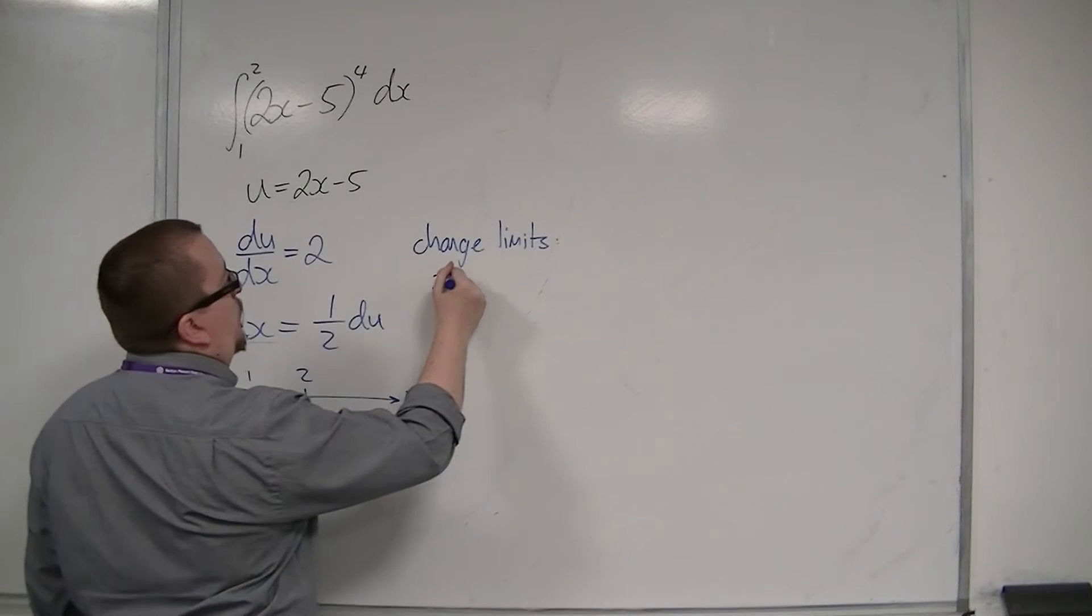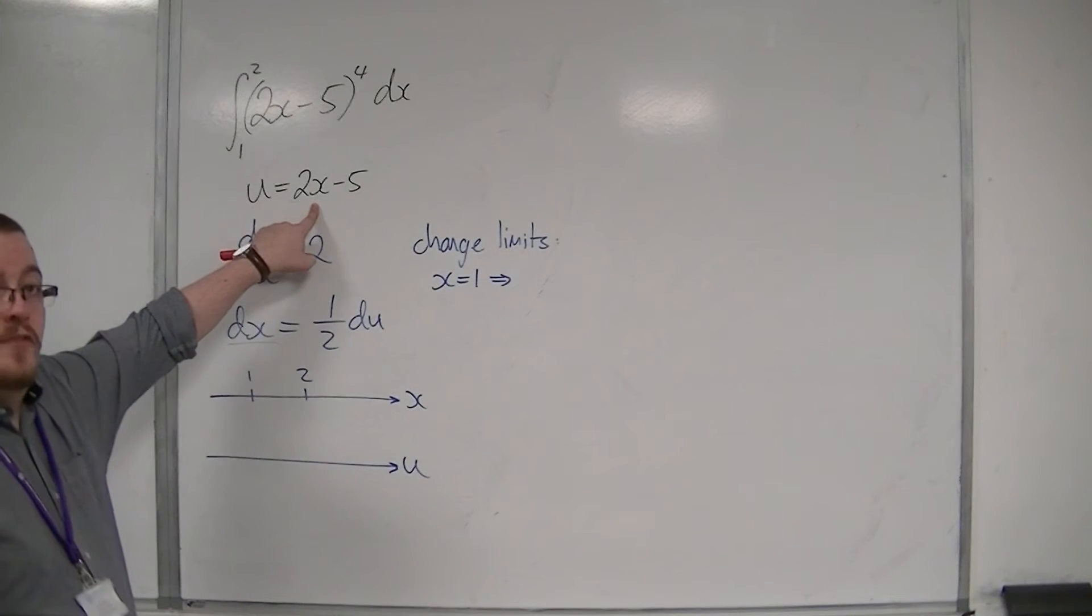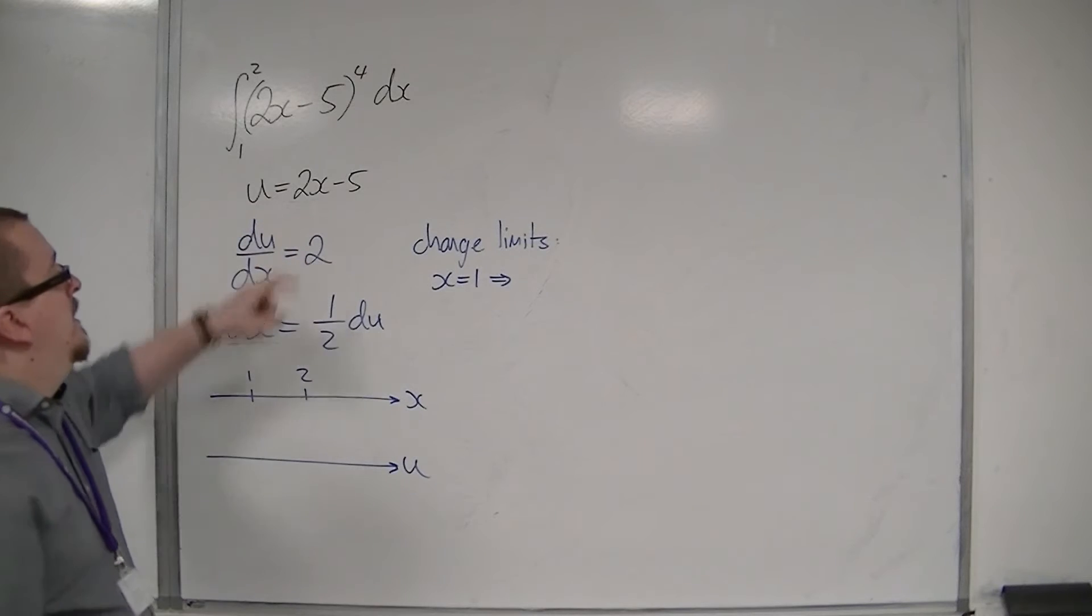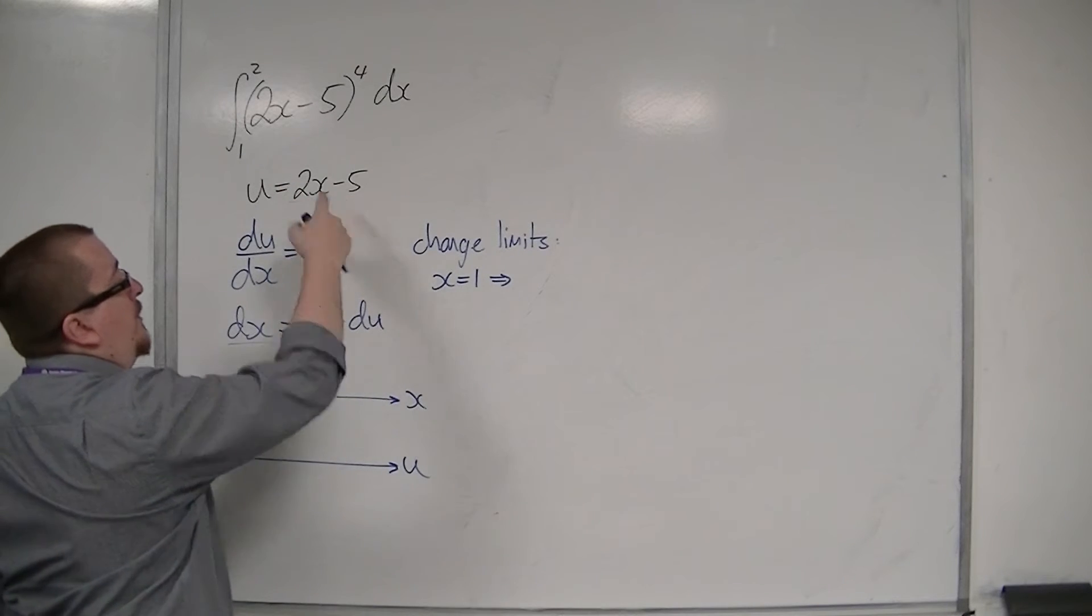So, when x is 1, I can substitute that into this to find my value of u. So, when x is 1, I get 2 take away 5, so that's minus 3.